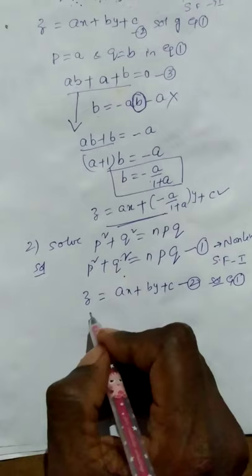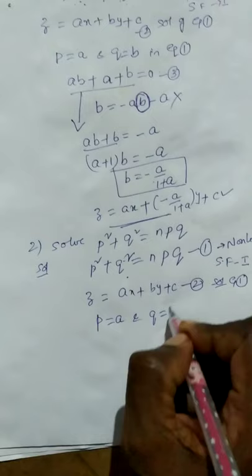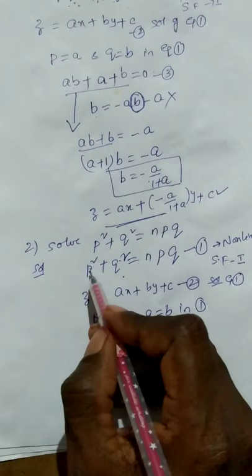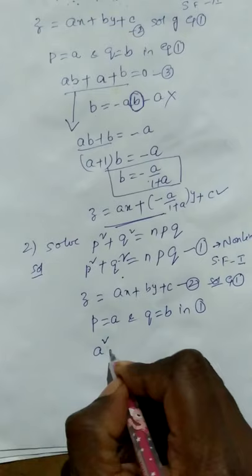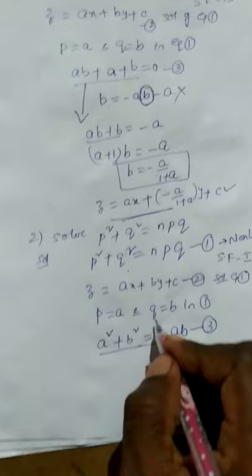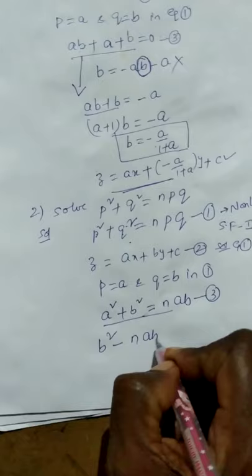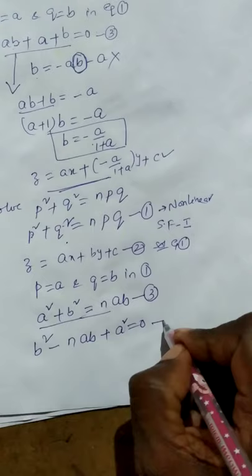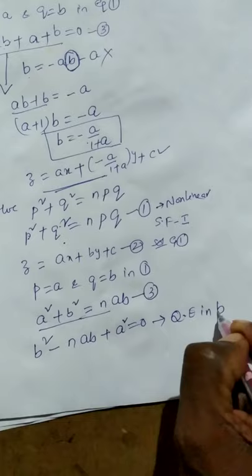From step 3, we substitute p = a and q = b in equation 1: a² + b² = n·a·b. This is equation 3. From this we find the value of b. We rearrange the equation: b² - n·a·b + a² = 0. This can be taken as a quadratic equation in b.